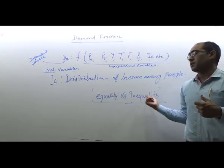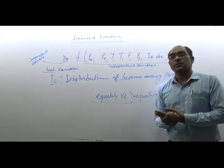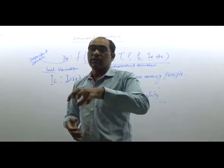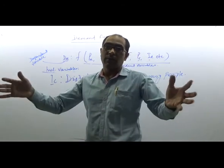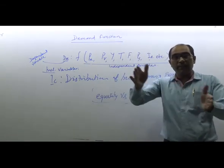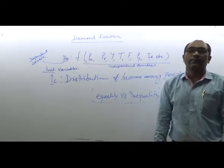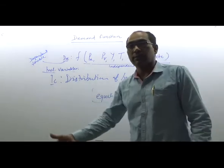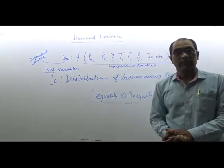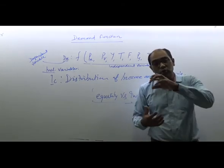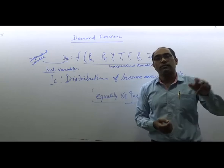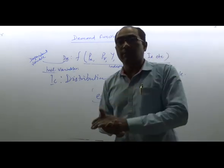The range of the product depends on the distribution of income among people. With more inequality, the range is higher — the gap between the minimum and maximum price is large. If society is more equal, the gap between minimum and maximum price is smaller.